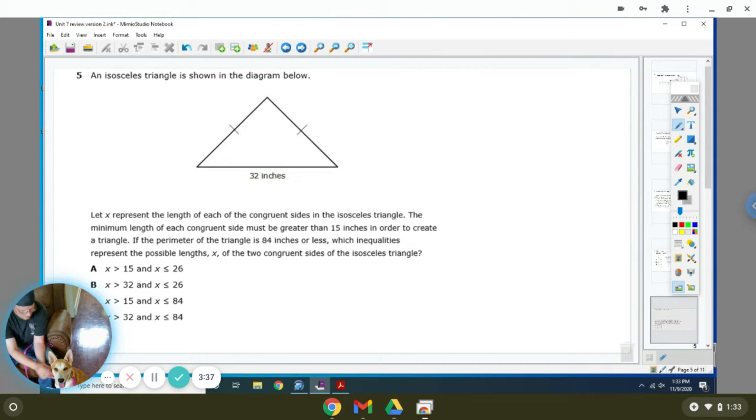An isosceles triangle is shown in the diagram below. An isosceles triangle is a triangle that has two equal sides. So let X represent the length of the congruent sides of the isosceles triangle. The minimum length of the congruent side must be greater than 15 inches in order to create a triangle. If the perimeter of the triangle is 84 inches or less, which inequalities would represent the possible lengths of the two congruent sides of the isosceles triangle? So your inequality is 2X plus 32 has to be less than or equal to 84 inches.